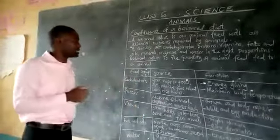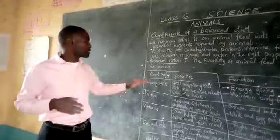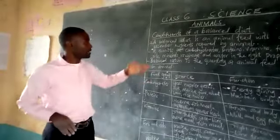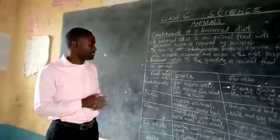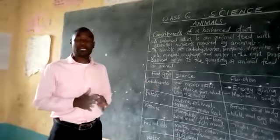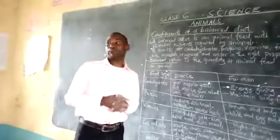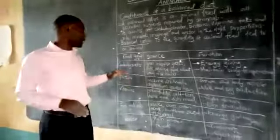Now I want us to look at the different constituents of a balanced diet, their source and their function in the body of the animal. Now we have carbohydrates.